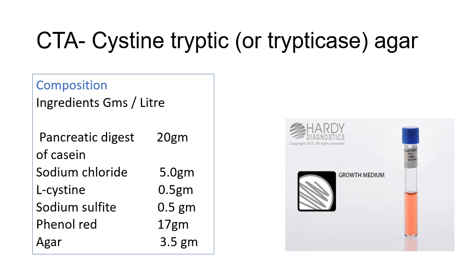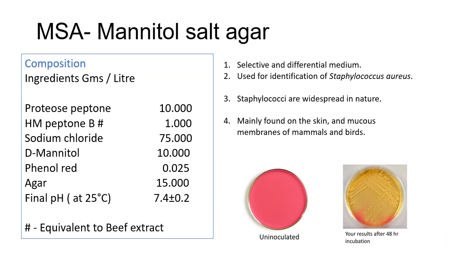The addition of agar to the medium allows for detection of motility along the stab line of inoculation. Motile organisms extend from the stab line and produce turbidity or cloudiness throughout the media, whereas non-motile organisms will only grow along the stab line, leaving the surrounding media clear. Next is MSA, which stands for Mannitol Salt Agar.